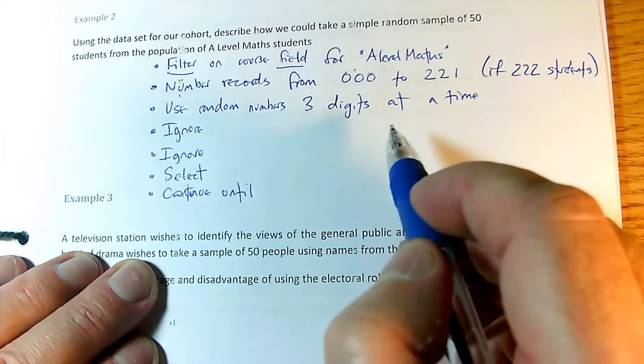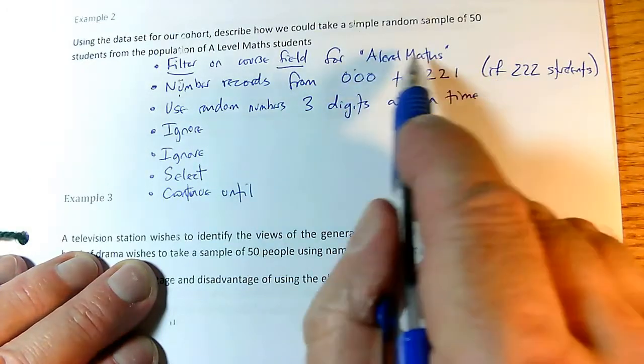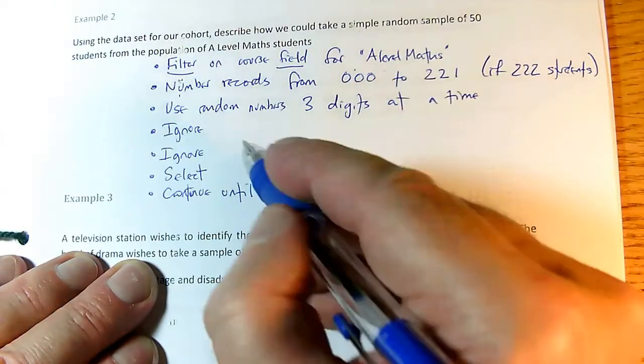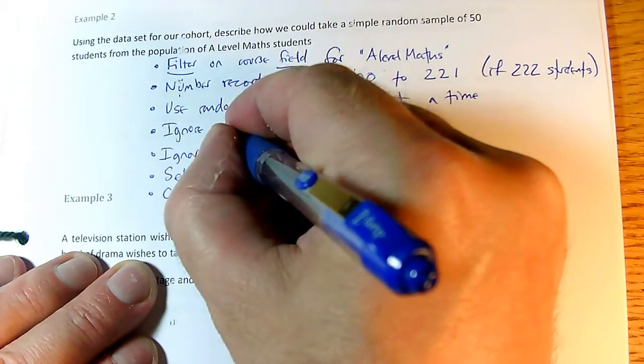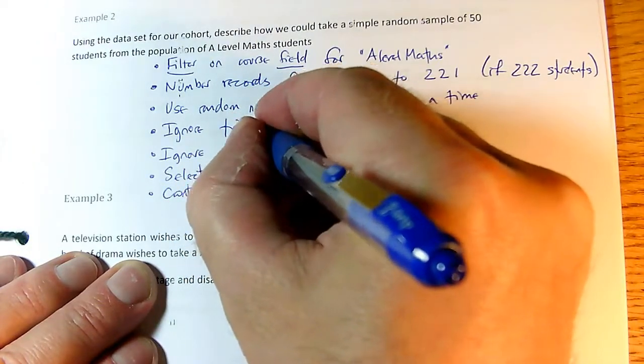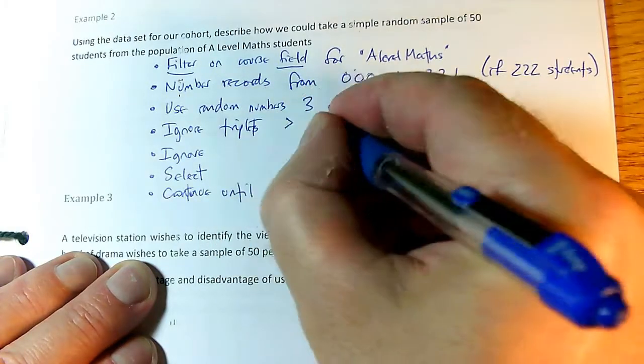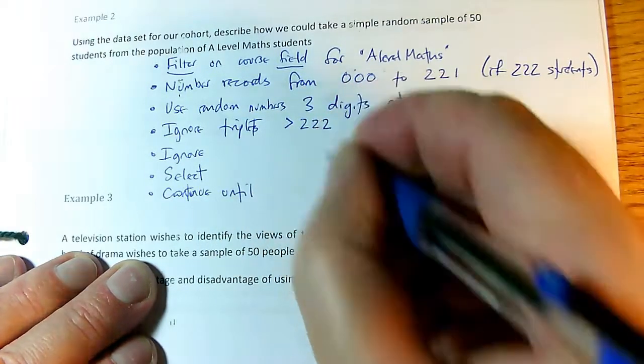Alright, what will we need to ignore? Well, if the three digits are not the number of a student, then we need to ignore them. So we ignore triplets greater than 222.